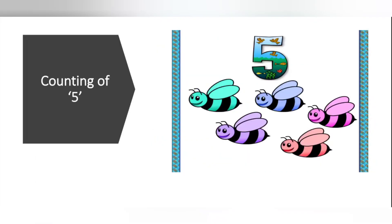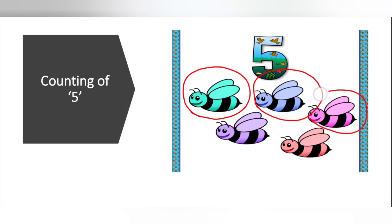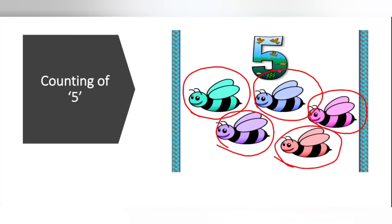So you got it right — how to trace the number 5. Very good. Now we will see how to count the number 5. So here there are some bees. Let us count those bees: 1, 2, 3, 4, 5. So how many bees are there? 5 bees are there.